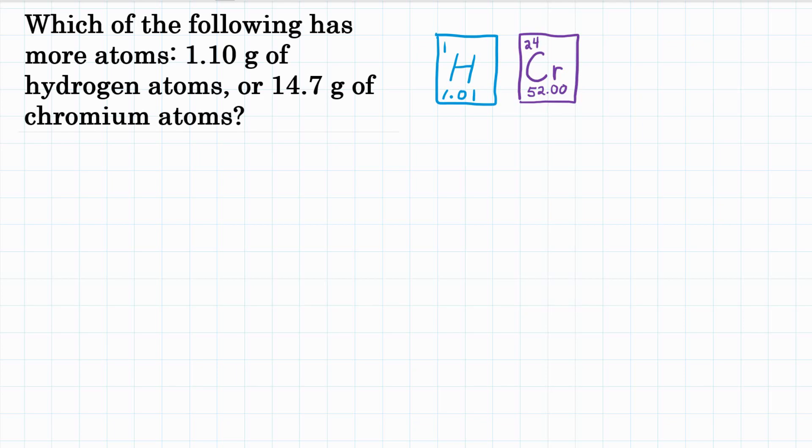Alright everyone. Which of the following has more atoms? 1.10 grams of hydrogen atoms or 14.7 grams of chromium atoms?